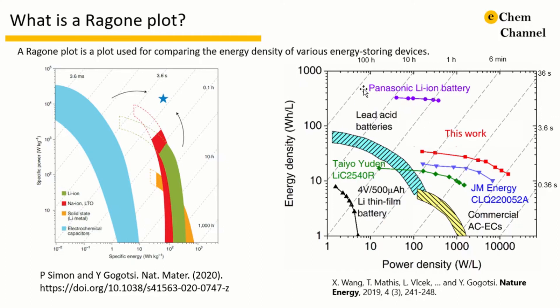The gray dashed line on the Ragone plot represents the time to fully charge or discharge the device. When this gray dashed line is given on the Ragone plot, it shows very clearly that the charge and discharge of a supercapacitor can be achieved within seconds to minutes, while for a battery it takes several minutes to several hours to charge and discharge.